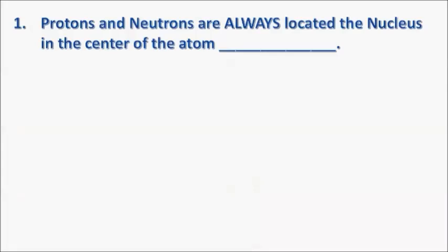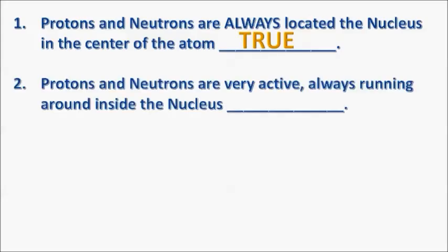All right. First one, true-false. Protons and neutrons are always located in the nucleus in the center of the atom. Totally true. Protons and neutrons are very active, always running around inside the nucleus. This is so false.